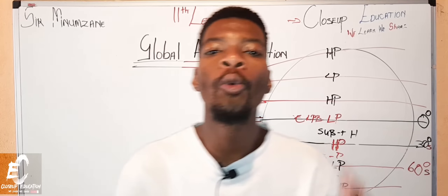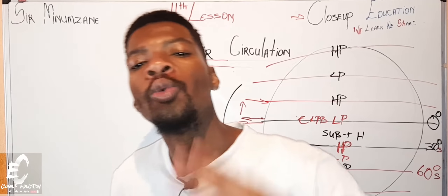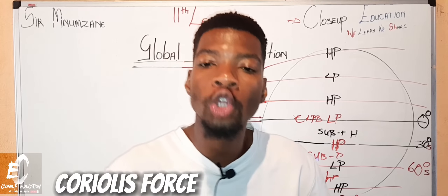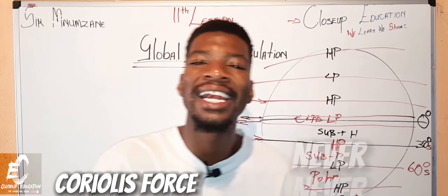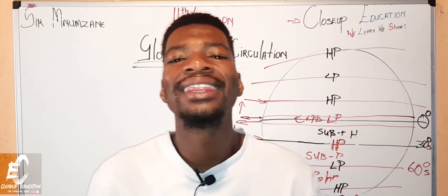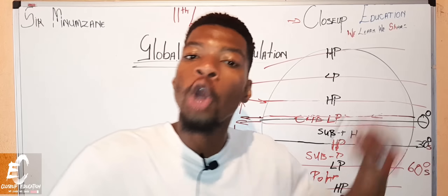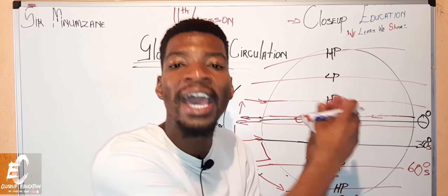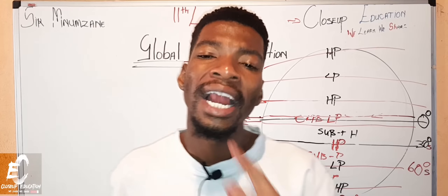Now, how does wind actually move? Wind is pushed by a force called the Coriolis force, which determines how air moves according to earth's rotation. The Coriolis force is not strong between zero and five degrees — it cannot operate at the equator. From five degrees north or south, it kicks in: in the northern hemisphere wind deflects to the left, and in the southern hemisphere it deflects to the right.